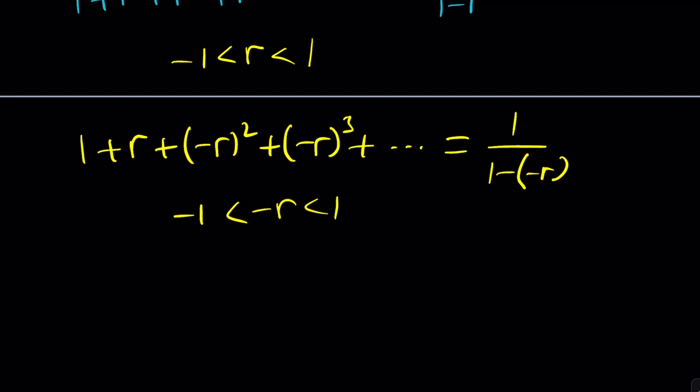Notice that if you raise negative R to an even power, it's going to turn into positive R squared. So it's going to be like this. 1 minus R plus R squared. Simplifying from here. Minus R cubed plus R to the fourth. So on and so forth. And of course, the right-hand side is also going to turn into 1 over 1 plus R. Nice. So far, so good.